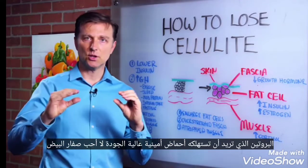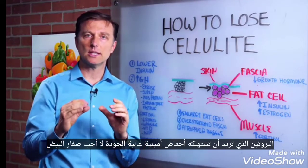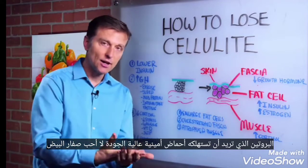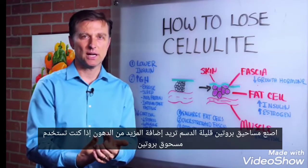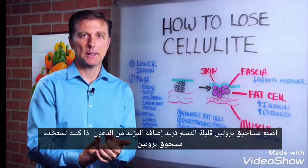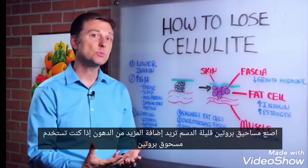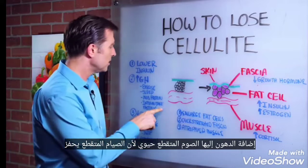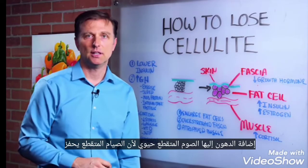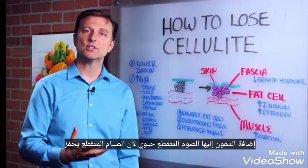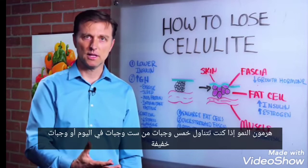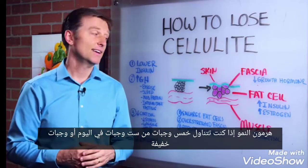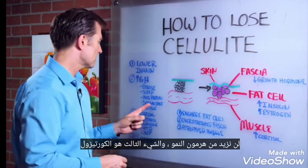Consume a moderate amount of protein — high quality amino acids. I like eggs and egg yolk. Don't do low-fat protein powders; add more fat. If you do a protein powder, add fat to it. Intermittent fasting is vital because it triggers growth hormone. If you're doing five or six meals a day spread out, or snacking, you're never going to increase growth hormone.